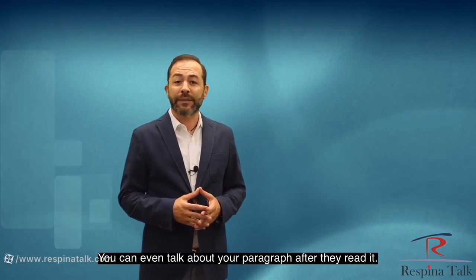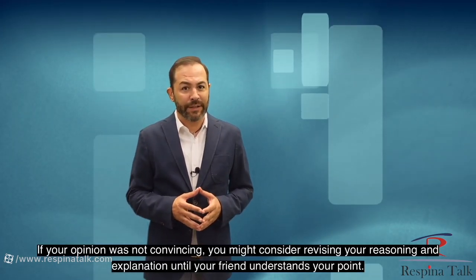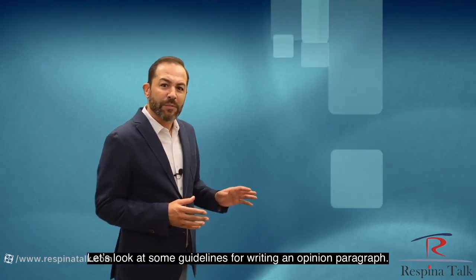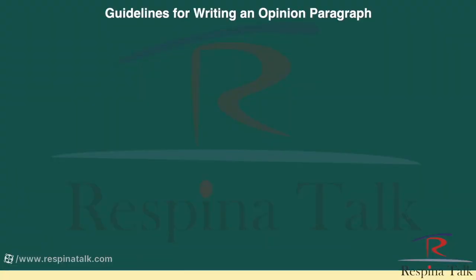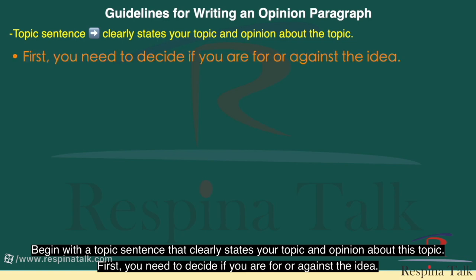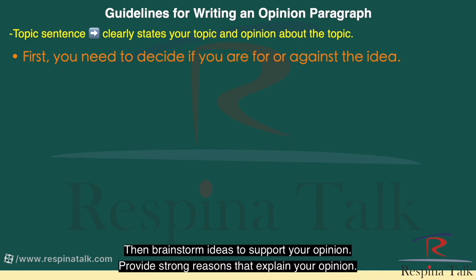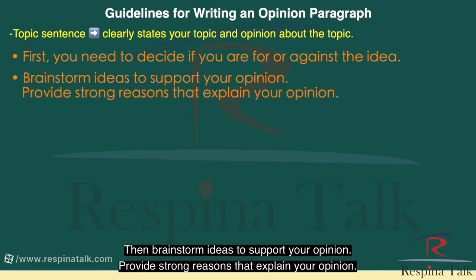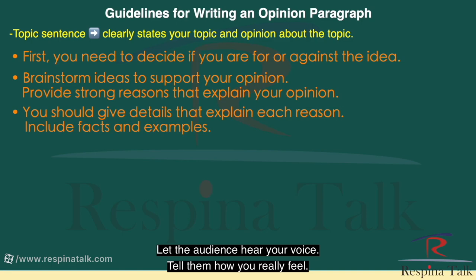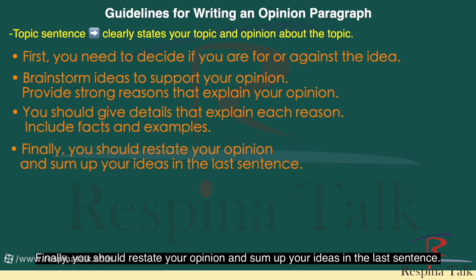You can even talk about your paragraph after they read it. If your opinion was not convincing, consider revising your reasoning and explanation until your friend understands your point. Let's look at some guidelines for writing an opinion paragraph. Begin with a topic sentence that clearly states your topic and your opinion about it. First, decide if you are for or against the idea. Then brainstorm ideas to support your opinion. Provide strong reasons that explain your opinion, and give details that explain each reason. Include facts and examples. Let the audience hear your voice — tell them how you really feel. Finally, restate your opinion and sum up your ideas in the last sentence.